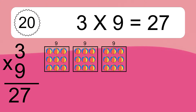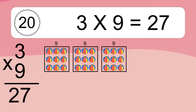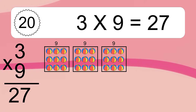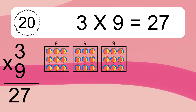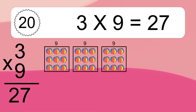We have 6 boxes and each box has 9 colorful balls inside. If you count all the balls in all the boxes together, you will have 6 times 9 balls. This equals 54 balls. 8 times 6 equals what?